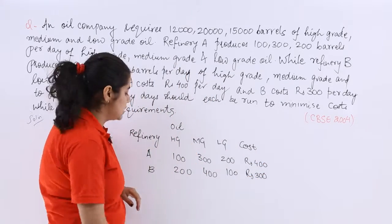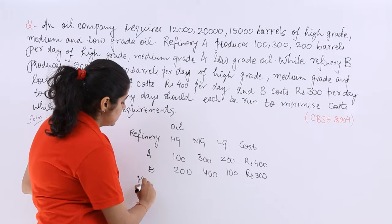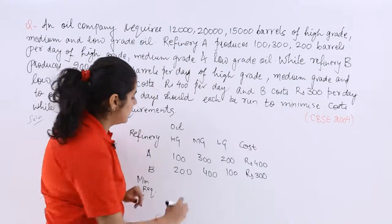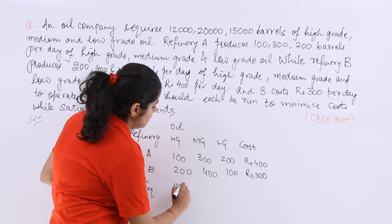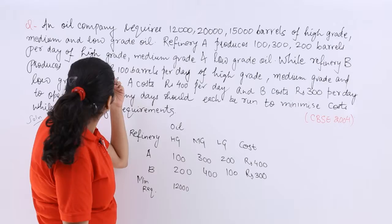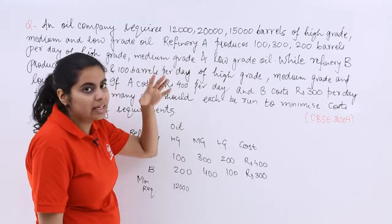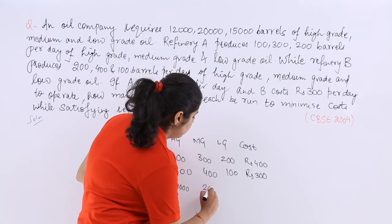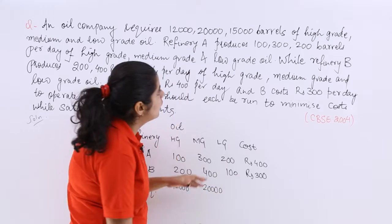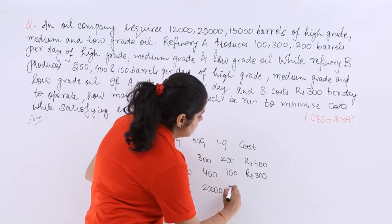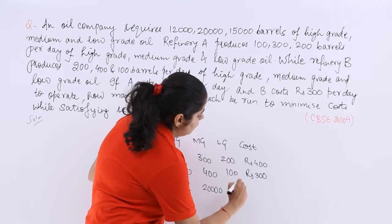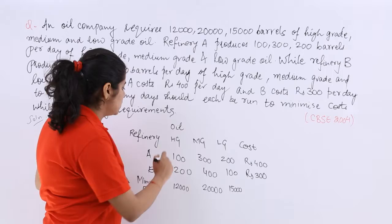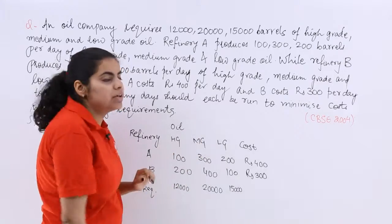Also one more thing is into picture the requirements. So the minimum requirements if I am not wrong. So company requires 12,000 barrels of these low, high and everything is given. So high is for 12,000. 20,000 means medium. And your 15,000 is there. So this is it. So high, medium, low grade oil. So this is your table.